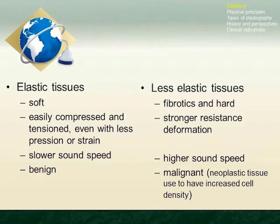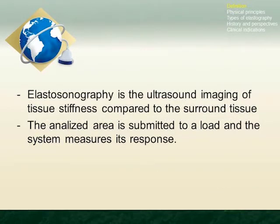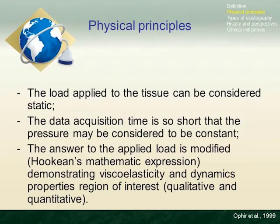Unlike elastic tissues, fibrotic and hard tissues have higher sound speed, stronger resistance to deformation, and are associated with malignancy. We can define elastosonography as the ultrasound imaging of tissue stiffness compared to the surrounding tissue. The analyzed area is submitted to a load and the system measures its response. The data acquisition time is so short that the pressure may be considered constant, demonstrating viscoelastic and dynamic properties in a qualitative and quantitative way.